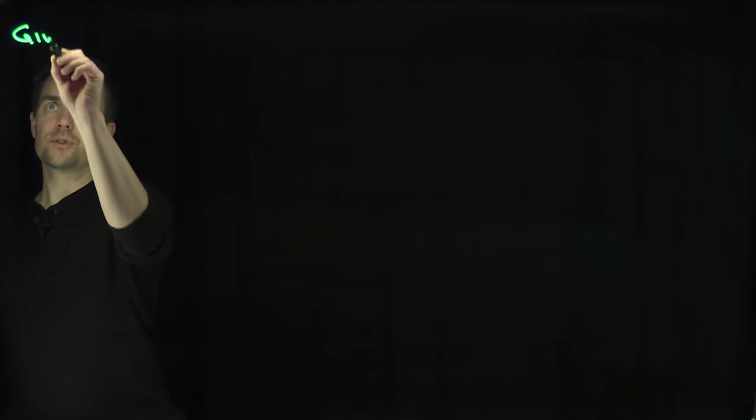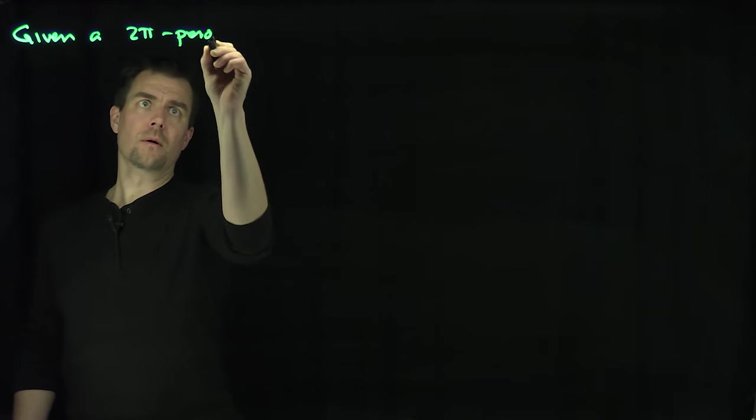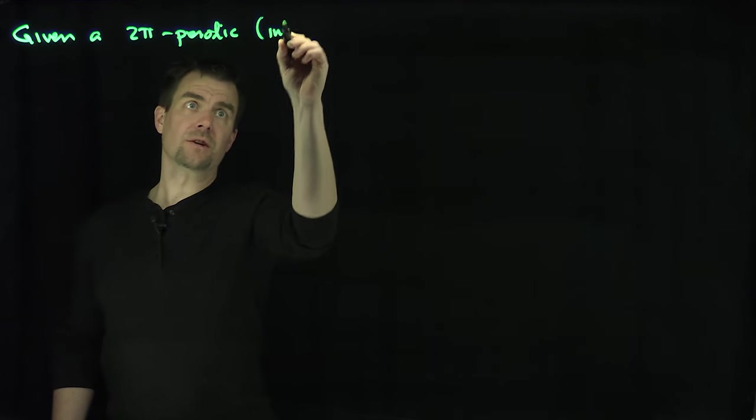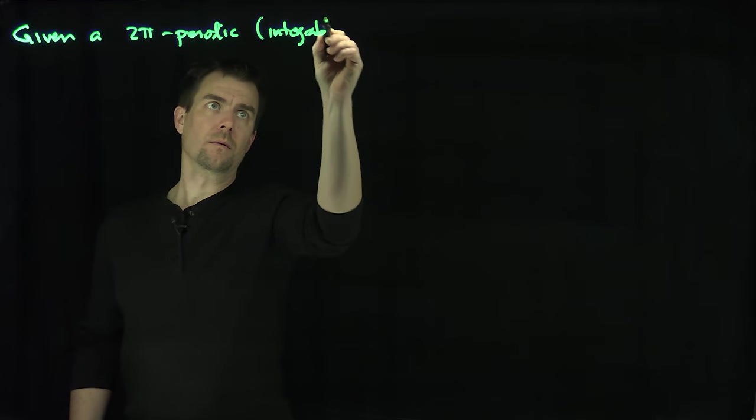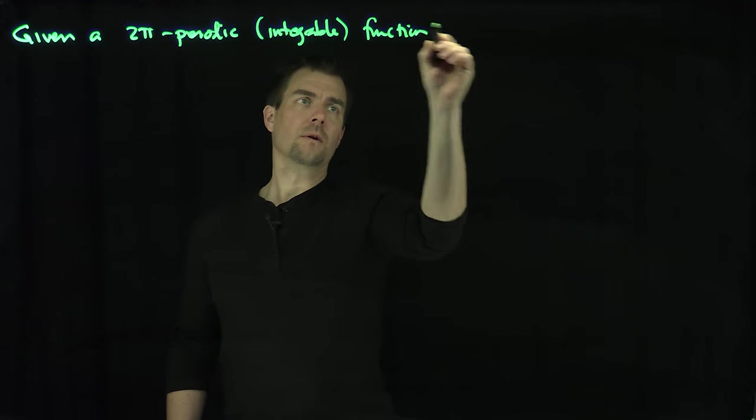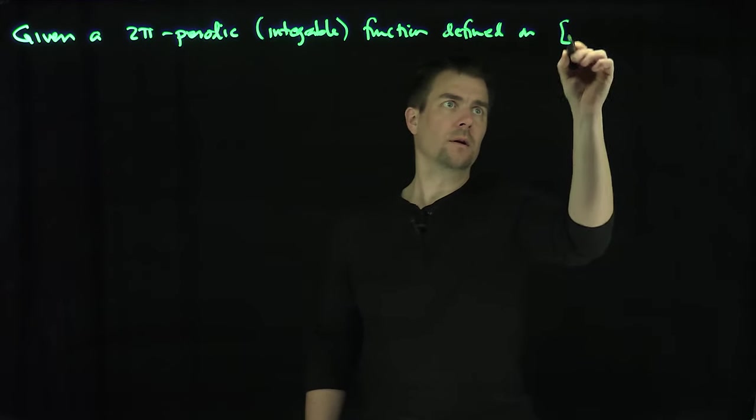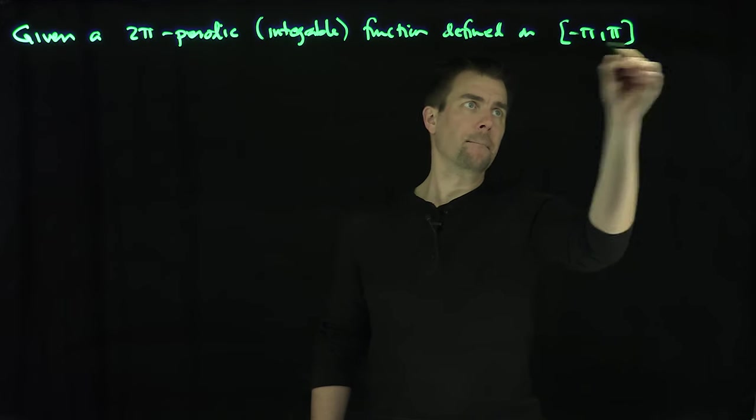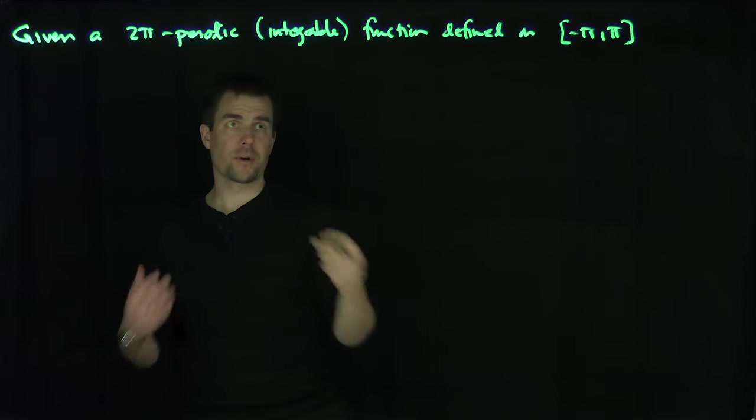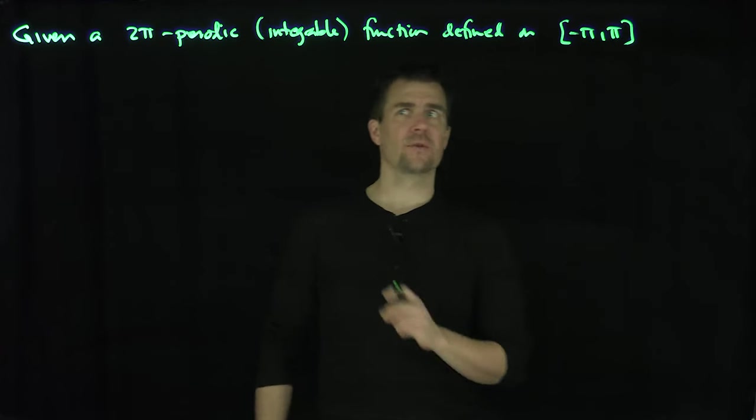So given a 2π periodic function, we have to also assume that it's an integrable function defined on negative π to π. Those points have to be identified by periodicity, or we can make one open to one close and sort of define it in a strange way if you like.